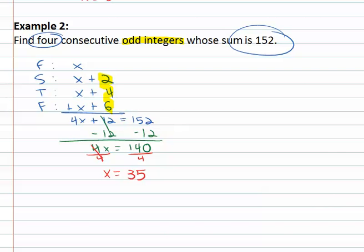Divide by 4 and x is equal to 35, and notice the answer is odd. The space is 2, 4, 6 because that's the space, but the answer we got of 35 is odd, that's what we were looking for.